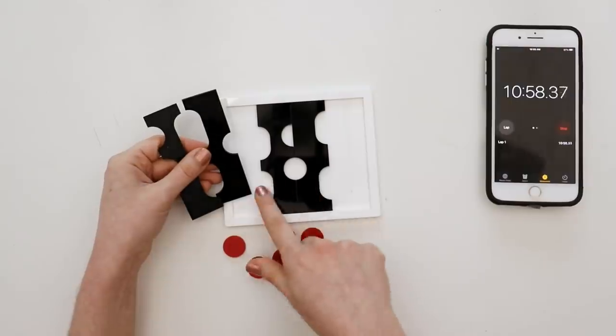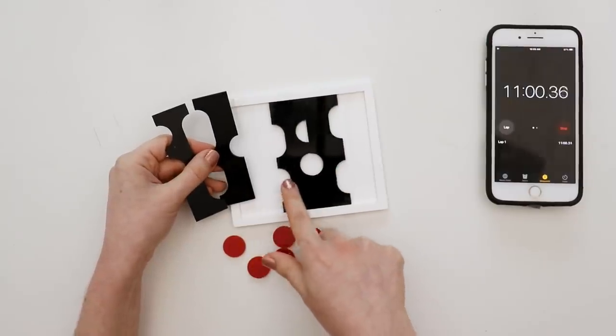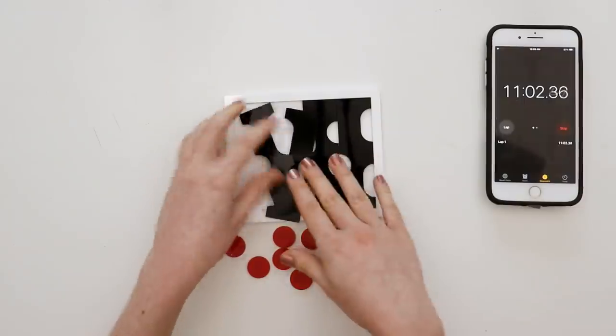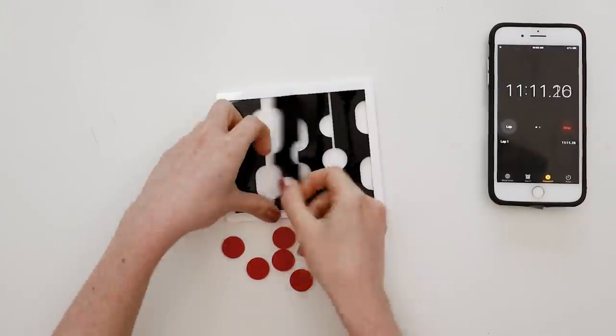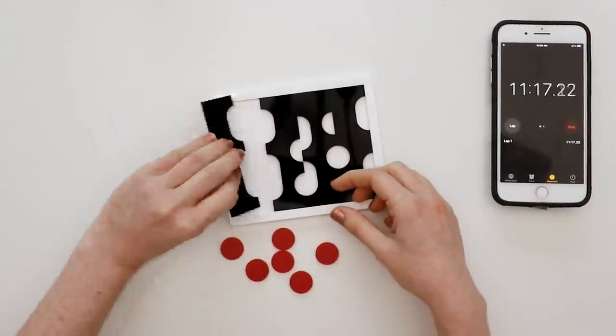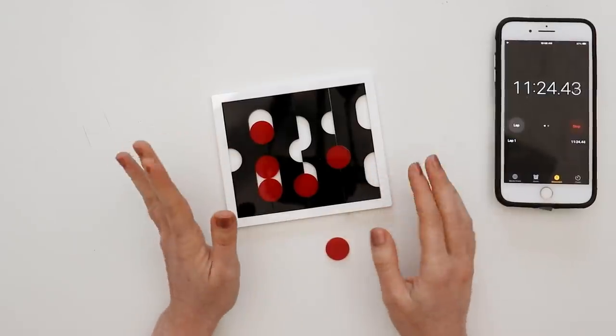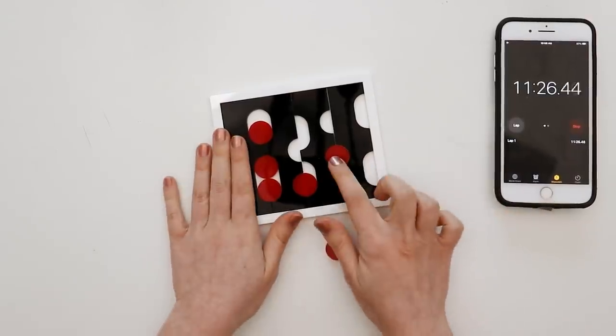Oh wait, these two were supposed to go together. Oh, I see what I did. Okay, never mind. I thought I had solved it, but I don't think we're quite there yet. All right, I found another way to get five pieces in here.